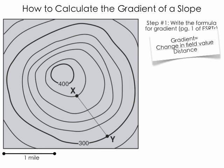Now in the case of a topographic map, the field value refers to the elevation. So we're looking at the difference in elevation between the two points, and we're going to take that and divide it by the distance between the two points. So step one of course would be to find that change in field value.